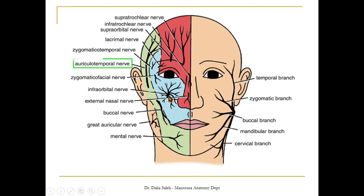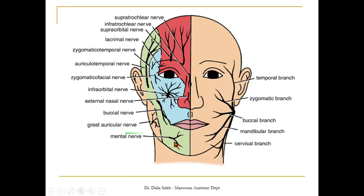From the mandibular nerve we have three divisions. One in front of the auricle is called the auriculotemporal nerve, which supplies the posterior part of the temple. Over the cheek we have the buccal nerve. And over the chin we have the mental nerve. This small area over the angle of the mandible and the parotid region will be supplied by the great auricular nerve, a branch of the cervical plexus, rather than the trigeminal nerve.